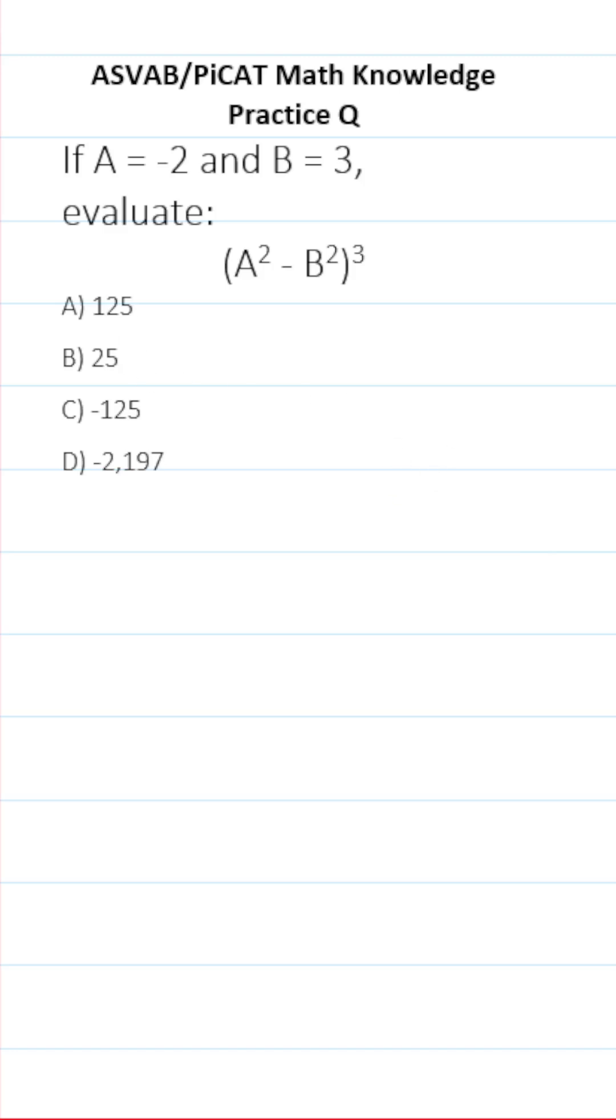ASVAB PICAT Math Knowledge Practice Test question says, if A equals negative 2 and B equals 3, evaluate the expression (A² - B²)³.